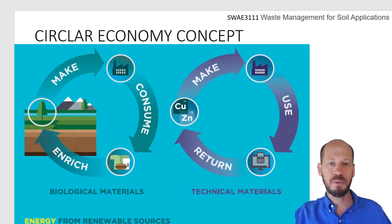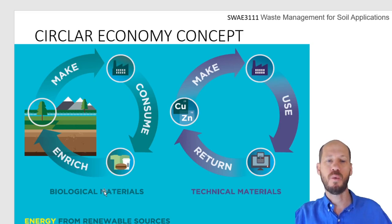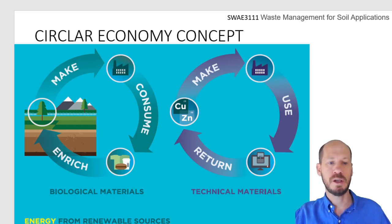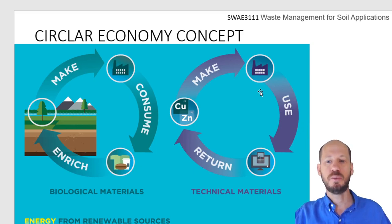What we need to do is design our societies by mimicking these natural ecosystems. If we only have a linear economy, at some point we will overuse natural resources, accumulate too much waste, and create too much environmental impact. From biological materials, we should use them to enrich production systems, make more biological materials, and have a cycle. For technical materials, we also need to recycle and reuse them so they return as inputs back into the economy.